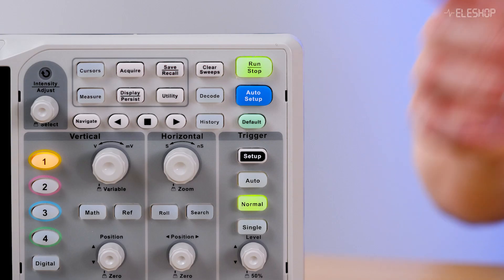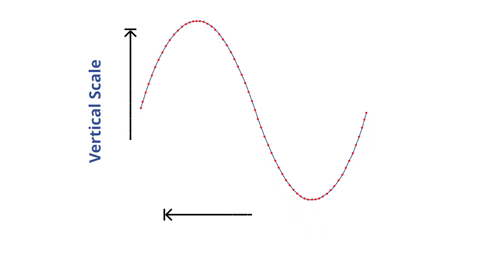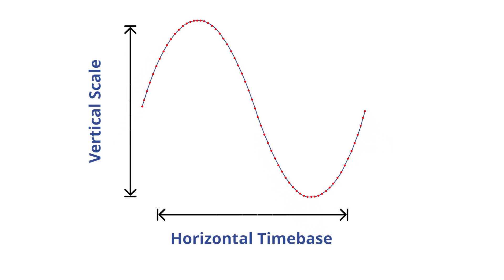What does AutoSet actually do? When you press AutoSet, the scope tries to detect the signal and adjust the vertical scale, horizontal time base, and trigger level automatically. Sounds great. But there's the issue: it assumes a repetitive, clean signal. It might set the wrong voltage or time range, and it often fails to trigger properly. Let's see that in action.